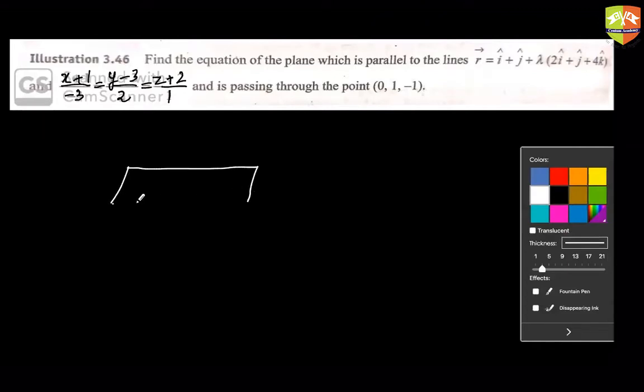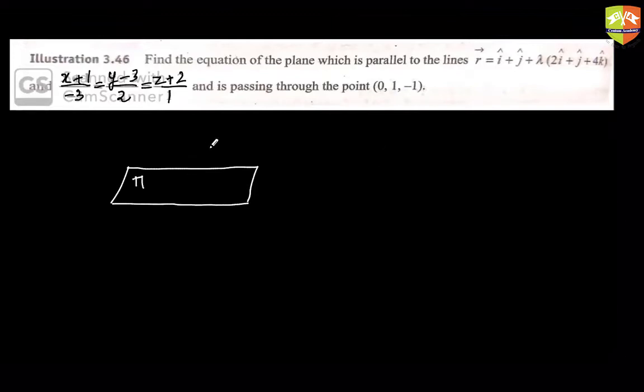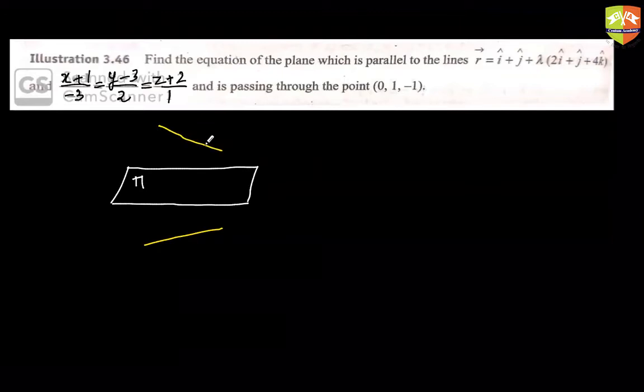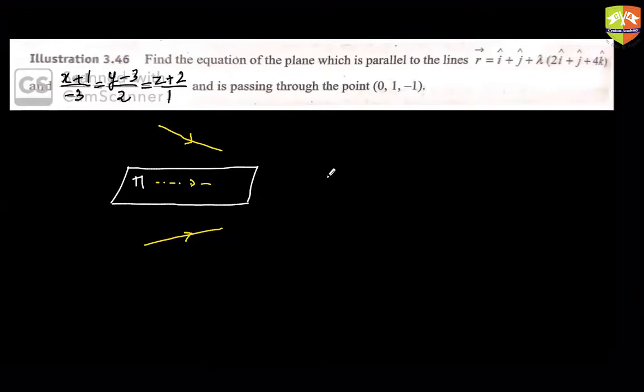So you have a plane like this. Let me call this plane as a pi plane. And this plane is parallel to the two lines. Parallel to the two lines means, let's say one line is like this, the other line is like this. So parallel doesn't mean the lines themselves have to be parallel. Both lines could be skew as well. So imagine as if you have, so Shriya has sent me an answer.